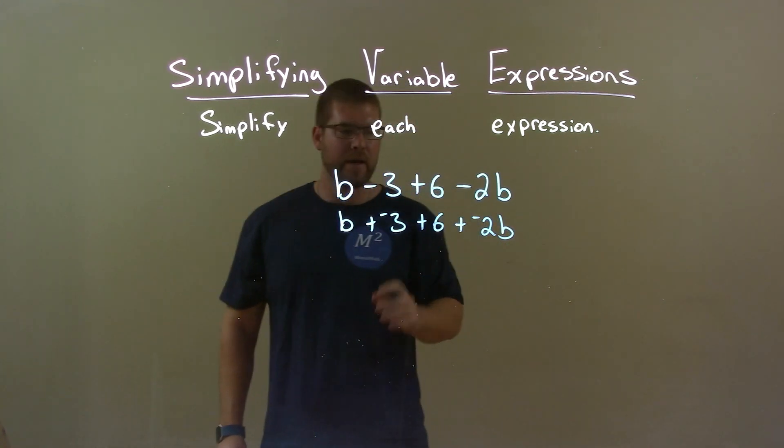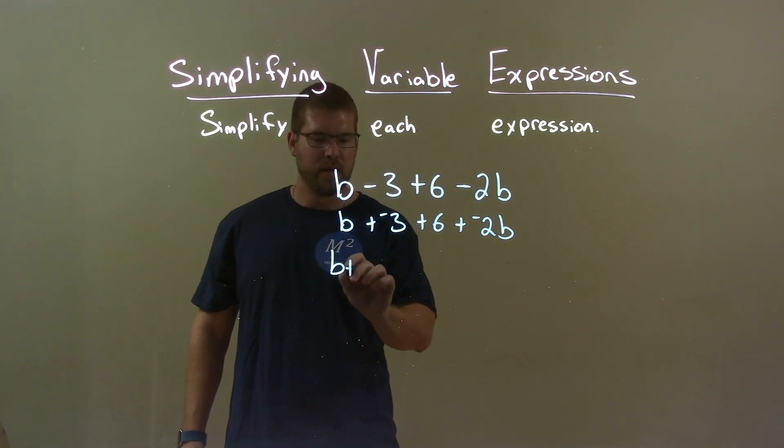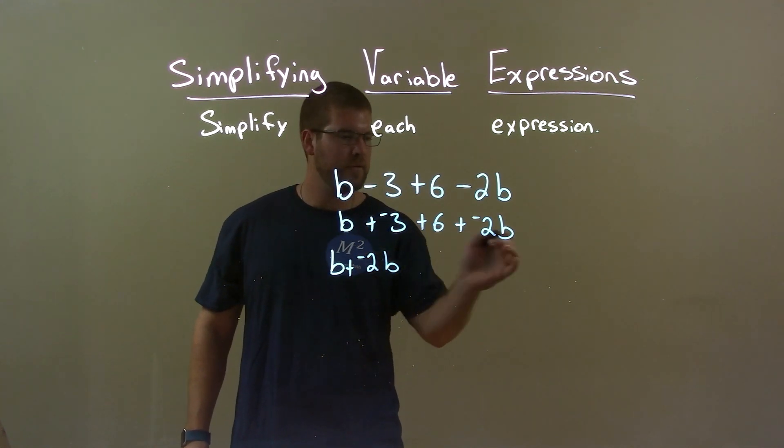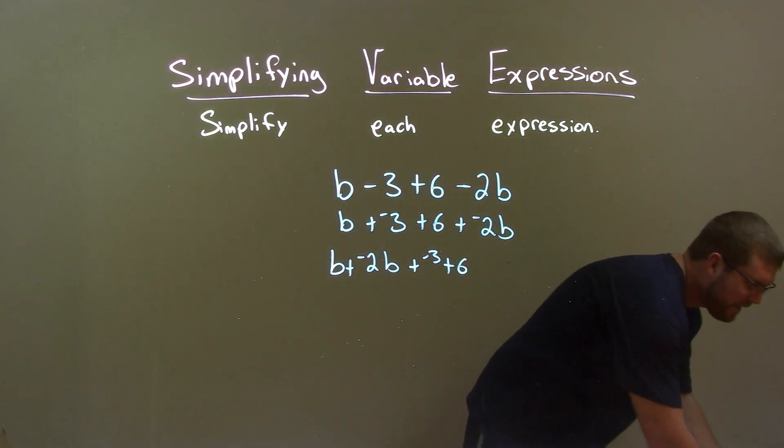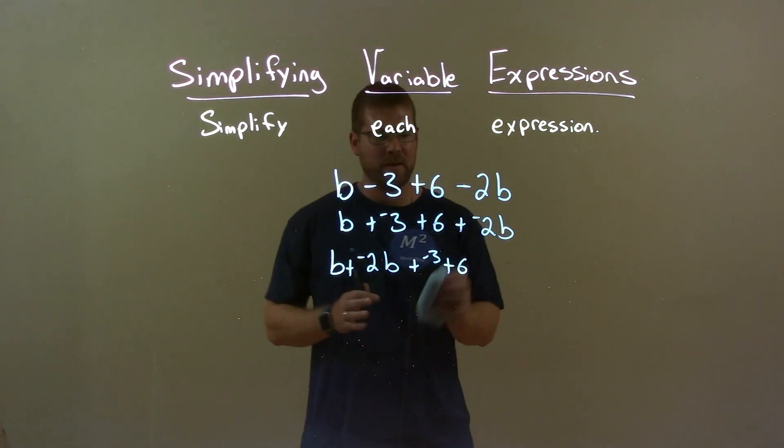And now I rearrange my b's together. b plus a negative 2b, got those two, and plus a negative 3, oops, plus 6. And that negative 3 is kind of floating up there. Don't need that to be that high up.